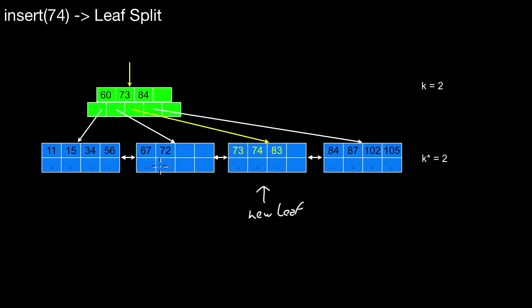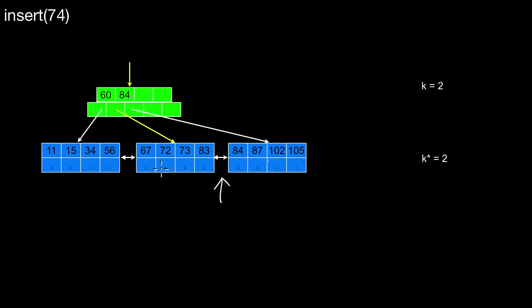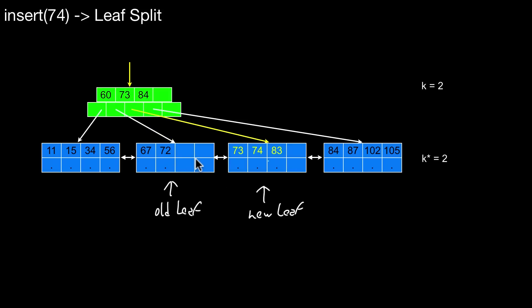All the entries are reshuffled. Some of the entries go to the old leaf and some go to the new leaf. Before we had 67, 72, 73 and 83. Now we reshuffle: one half of the entries goes to one leaf and the other half to the other. Then of course we insert the new entry — we still have to insert 74. Right after the split, this new leaf just contains the entries 73 and 83.